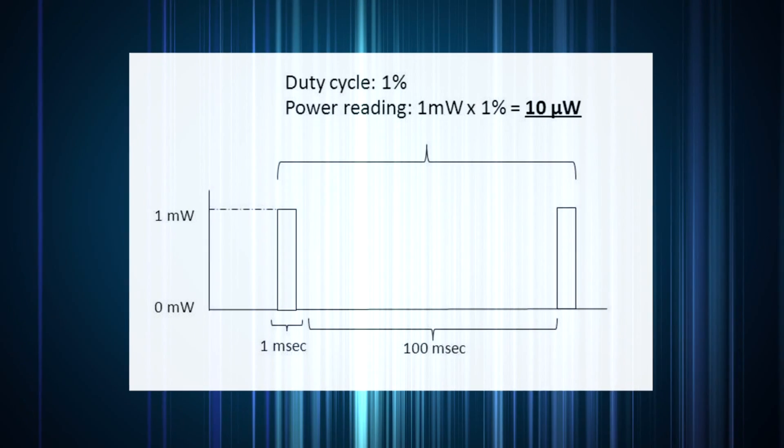Because the beam moves quickly over a wide area, it spends only a small fraction of its time on a sensor trying to measure it. Consider this example.